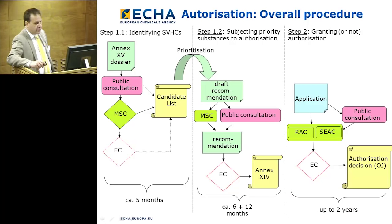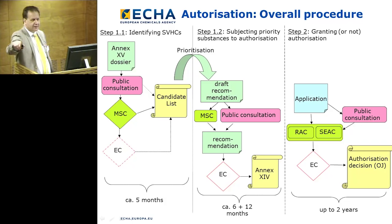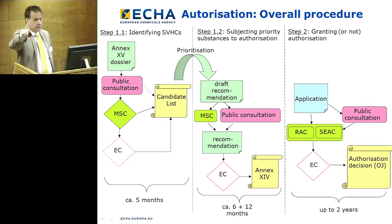The process here: you have the way of getting substances to Annex 14, so step 1.1.2. We are not discussing that at all here today. We are discussing: you make an application, get opinions from RAC and SEAC, it goes to the commission, and then there's a decision for the authorization. There's public consultation there, and this takes about two years.